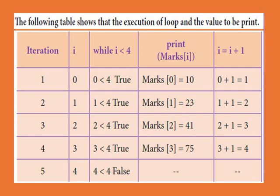Now at iteration step 4, i value is 3. So 3 less than 4 is true. Therefore marks of 3 equals 75. The output is 10, 23, 41, 75. Now i value increases by 1, so i becomes 4. Now 4 less than 4 is false, so the condition is false and the loop stops. This is how we execute the while loop.